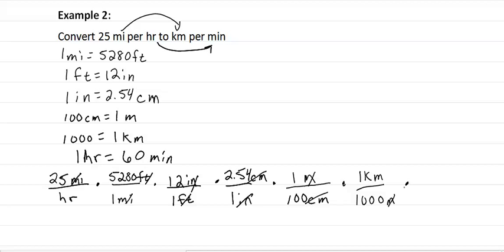Our next one we want to use, it looks like it's hours. So we have hours on the bottom, so we want hours on top here. So we want 60 minutes down below. Hours over hours is 1.